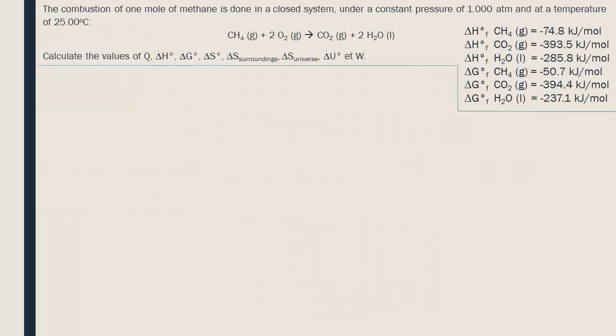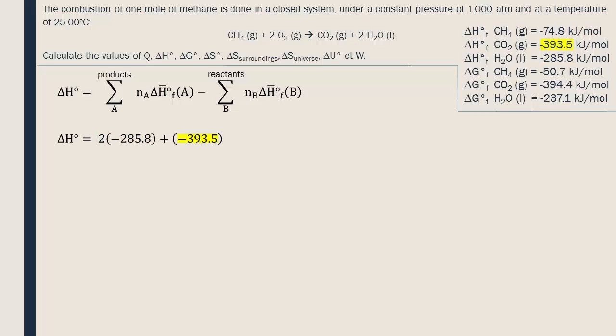According to Hess's law, delta H is equal to the sum of the enthalpies of formation of the products minus that of the reactants. The given enthalpy values must be multiplied by their respective stoichiometric coefficients. Remember that the enthalpy of formation of an element is zero. The gaseous oxygen is a pure element in its most stable form, therefore by definition its enthalpy of formation is zero.